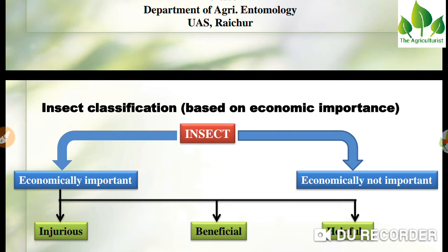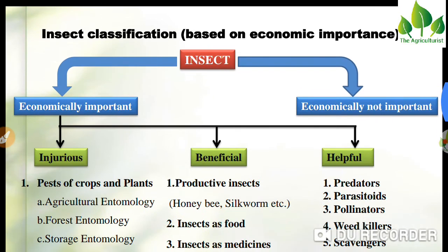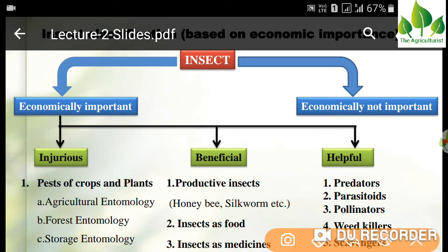Insect classification based on their economic importance. Before we start, we should know what an insect is. An insect is an organism which has three pairs of legs — which means hexapoda — two pairs of wings, and whose body is divided into three parts: head, thorax, and abdomen, and which have antennae and compound eyes. These insects are divided into two parts: economically important and economically not important.